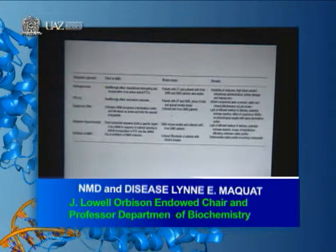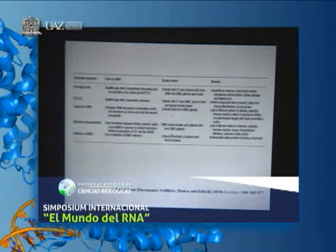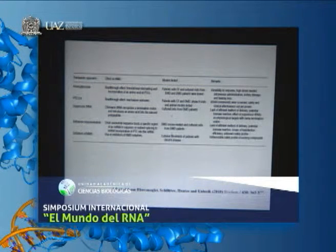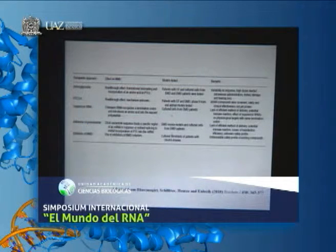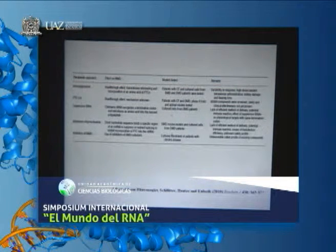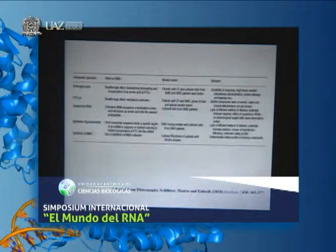Suppressor tRNAs are tRNAs that have an anticodon recognizing a termination codon but are charged with an amino acid. It's very difficult to introduce suppressor tRNAs into cells; so far these studies have used cultured cells. Antisense oligonucleotides have been used to change splice sites so that one can skip the PTC-containing exon or region, sometimes resulting in a protein with an internal deletion that has pretty good activity. Inhibitors of NMD have for the most part gone nowhere because proteins that function in NMD often function in other metabolic processes.